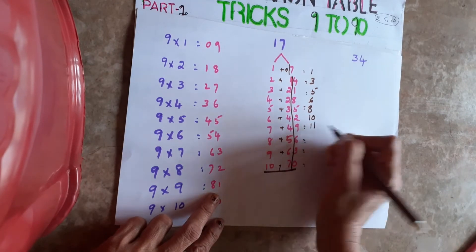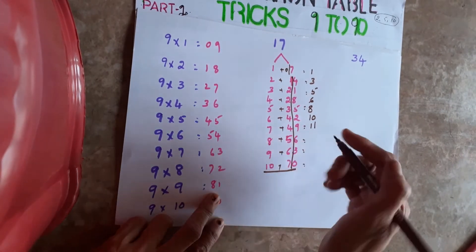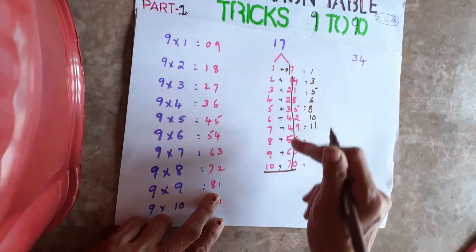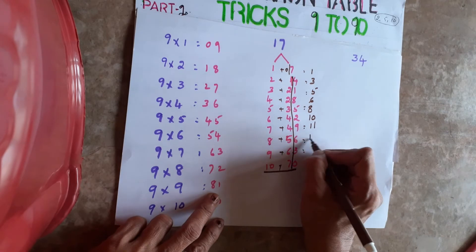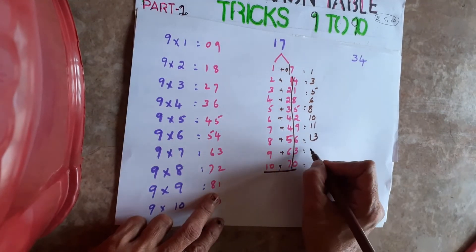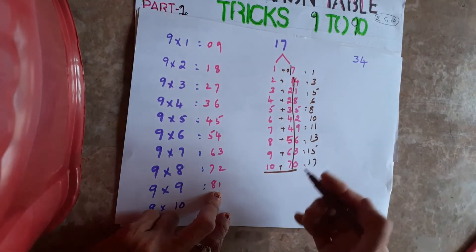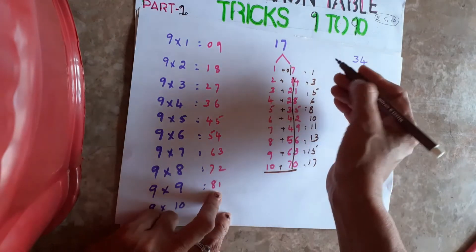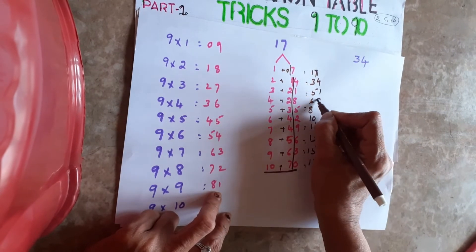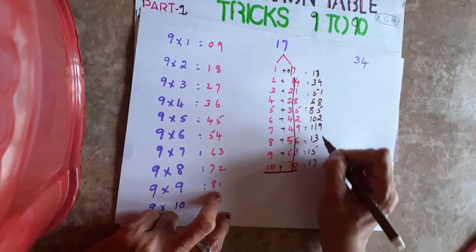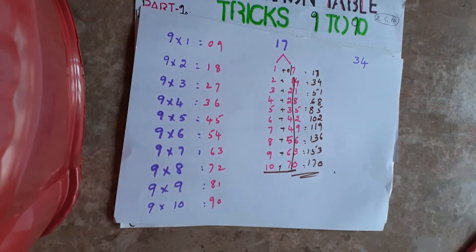Continue: 8 plus 5 is 13, 9 plus 6 is 15, 10 plus 7 is 17. After writing all the addition results, take whatever is in the units place of the 7-table and write it next to each result. You will get the answer: 17, 41, 85, 29, 63, and 0. That's how you do the 17th table.